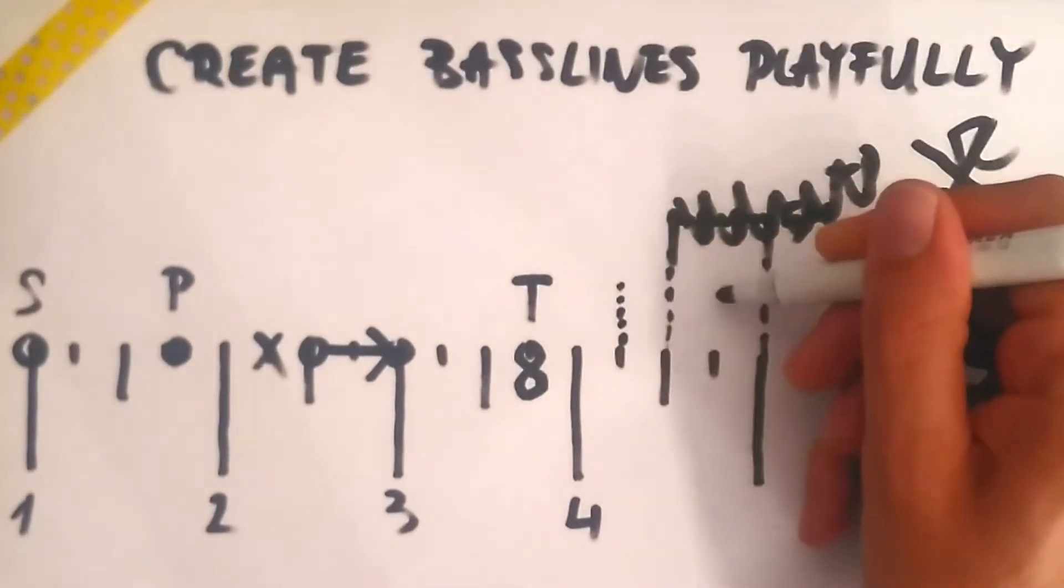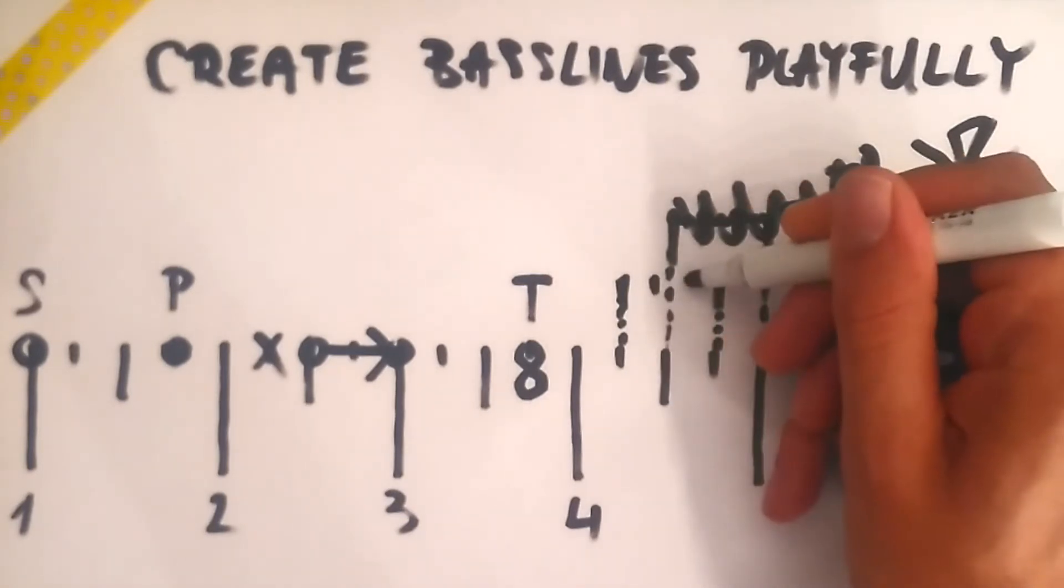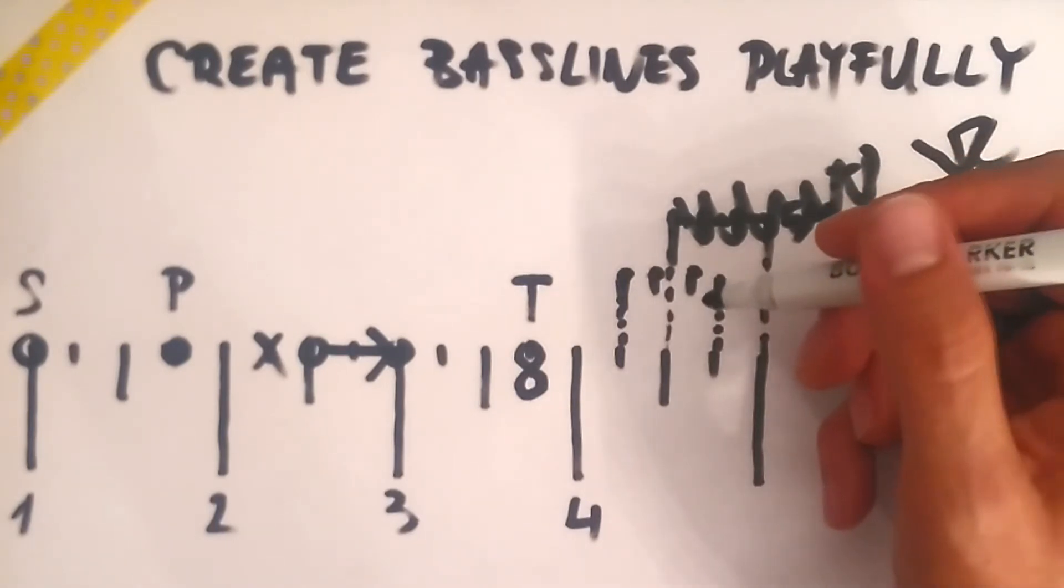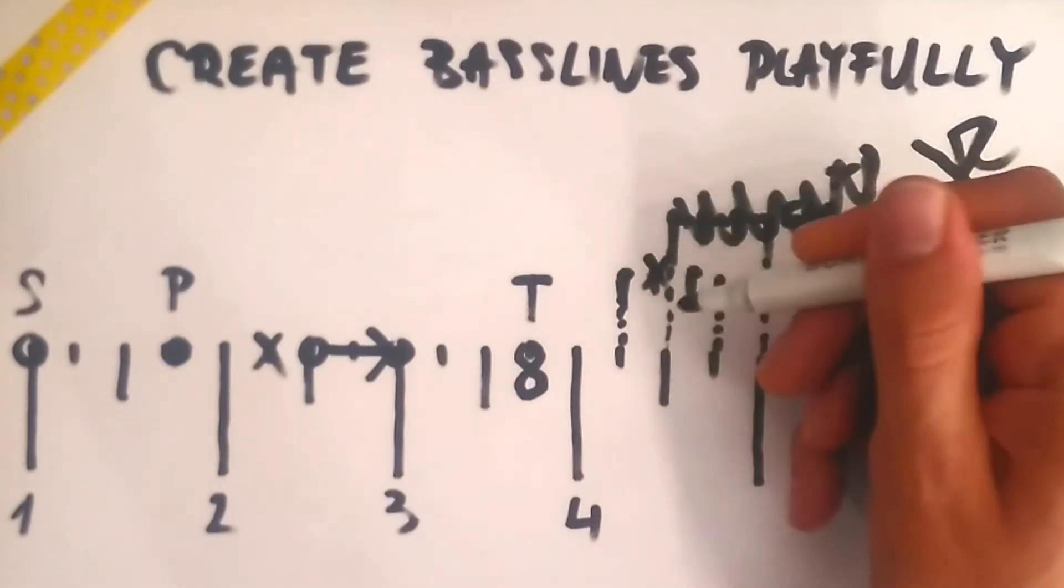The triplet can be placed anywhere in the bar. It doesn't have to start on a downbeat, which could create interesting rhythms. We also don't have to play each note of a triplet.